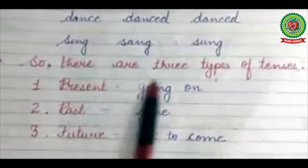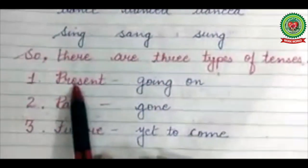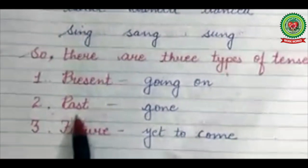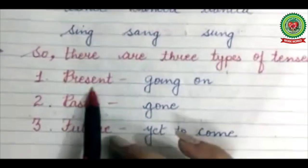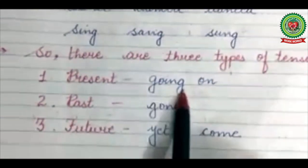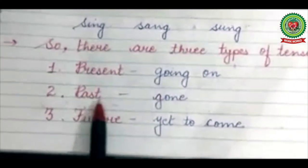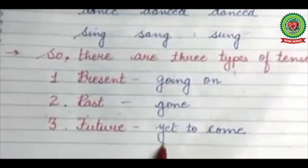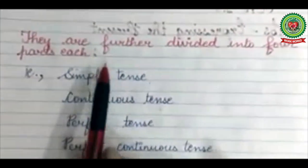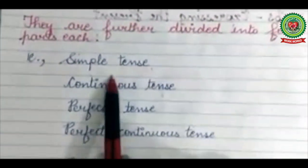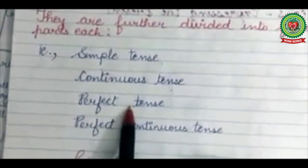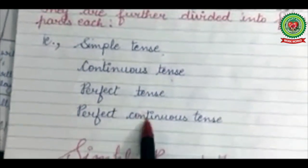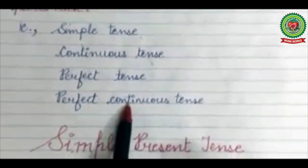There are three types of tenses: present tense, past tense, and future tense. Present is the one which is going on; past is that which has gone; and future is that which is yet to come. They are further divided into four parts each: simple tense, continuous tense, perfect tense, and perfect continuous tense.